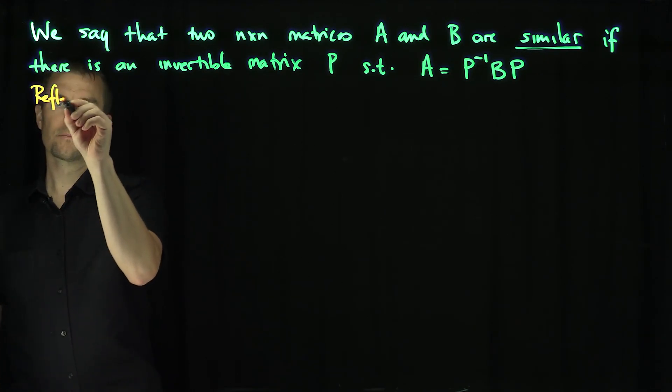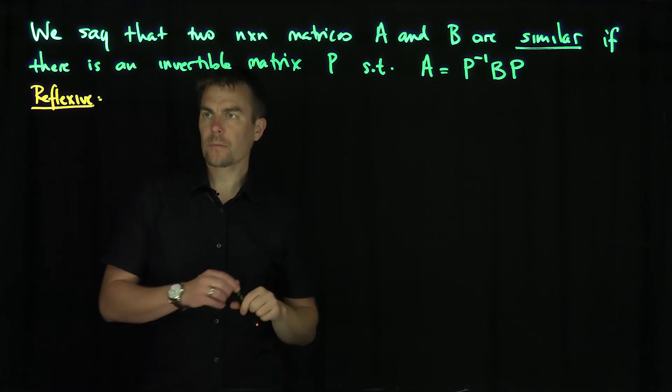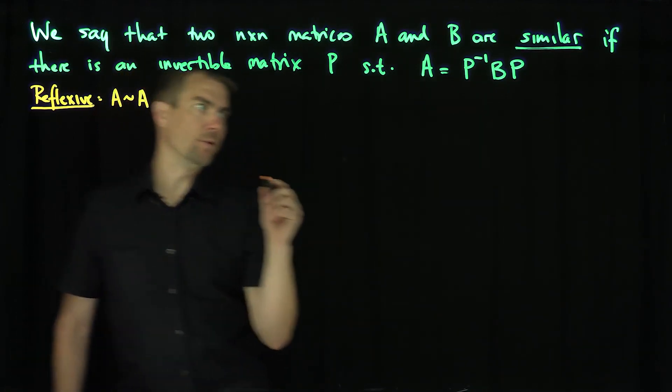The first property is that this is a reflexive property, because clearly A is similar to itself.